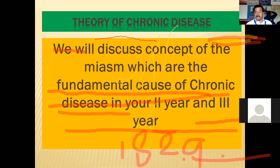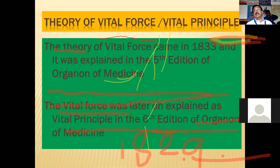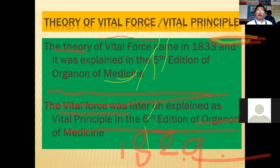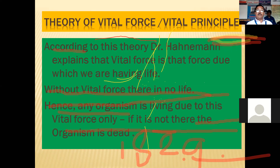This concept of the Theory of Chronic Disease was explained by Dr. Hahnemann in the fourth edition of the Organon of Medicine, which came in 1829. Homeopathy was discovered in 1790, became known in 1796, the first edition of the Organon came in 1810, and the Theory of Chronic Disease came in 1829. The concept of miasms as the fundamental cause of chronic disease will be discussed in detail in second and third year classes.